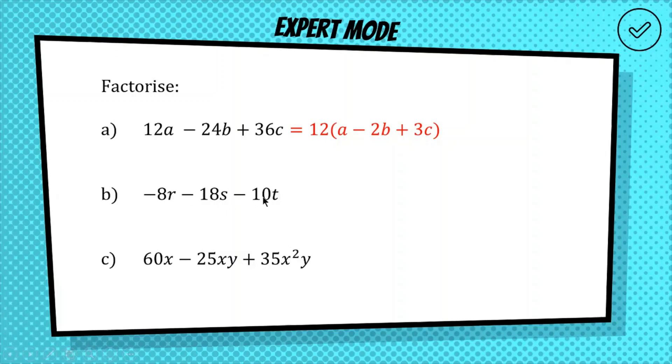So 8 doesn't work. 4 doesn't work. The only thing that's going to work for this is 2. 2 is the only number apart from 1. There's a factor of all 3, and because all 3 are negative, we may as well factor out a negative 2. If we're factoring a negative out of these three negative terms, it's going to turn them all into positive terms.